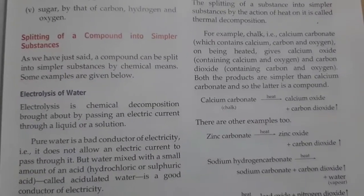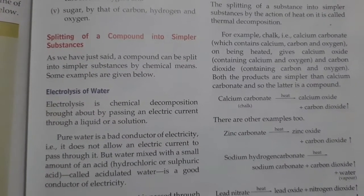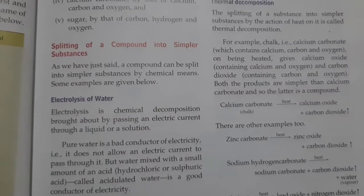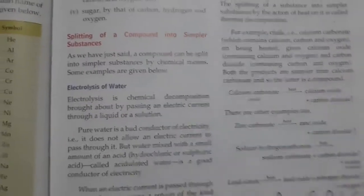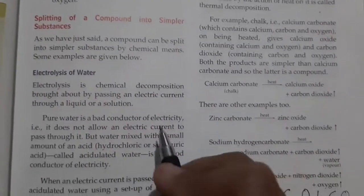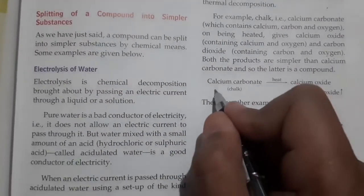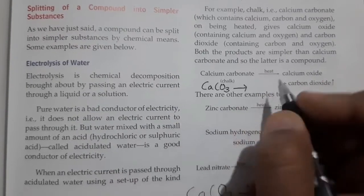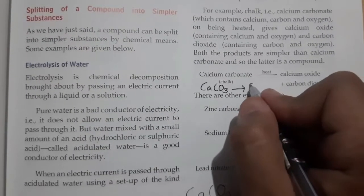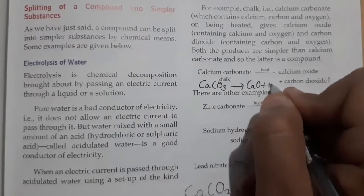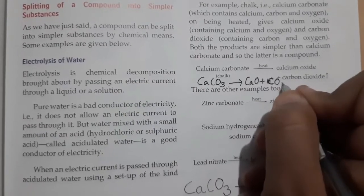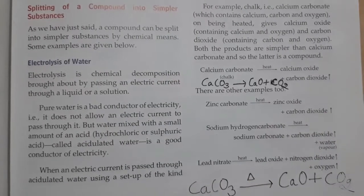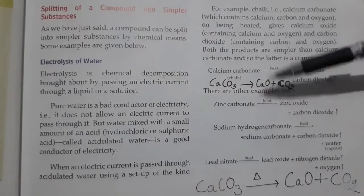Now we move towards thermal decomposition. Thermal decomposition means some chemical compounds decompose with the help of heat — they can be broken down into two or more different substances. For example, calcium carbonate requires very high heat, near 1000 degrees Celsius. The reaction is: CaCO3 on heating gives CaO + CO2. So calcium carbonate breaks down into calcium oxide and carbon dioxide.